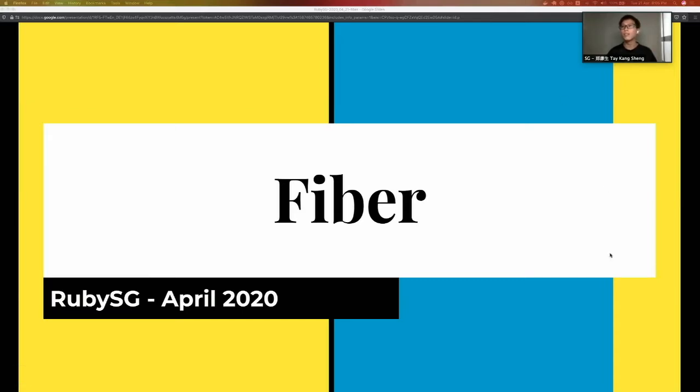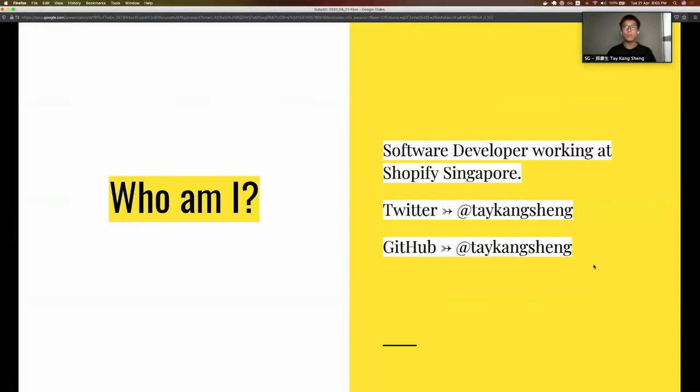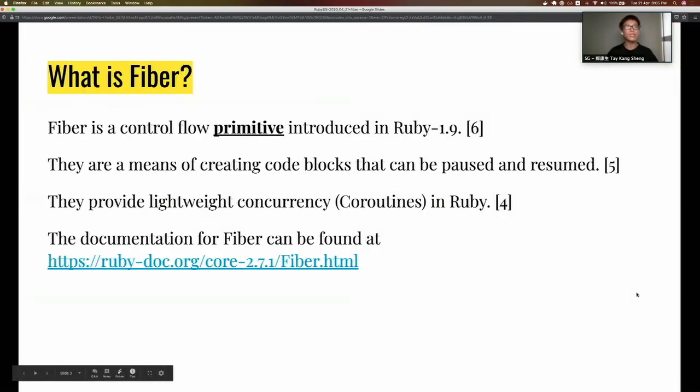Before I start, I'd like to introduce myself. My name is Kang Sheng and I'm a software developer working at Shopify. You can find me on Twitter and GitHub using this handle. Let's get started.